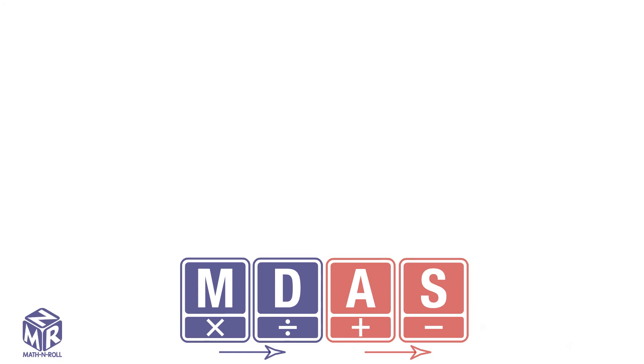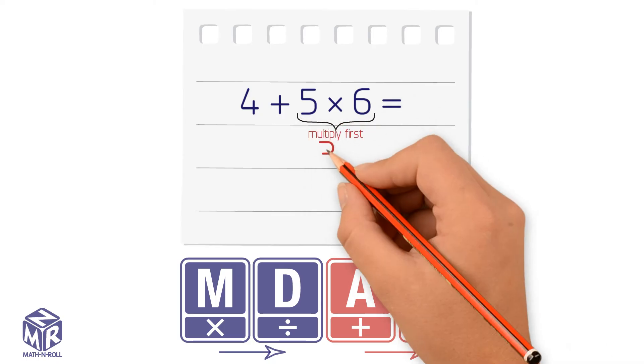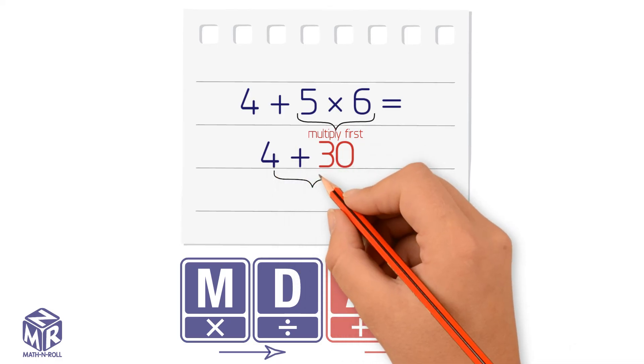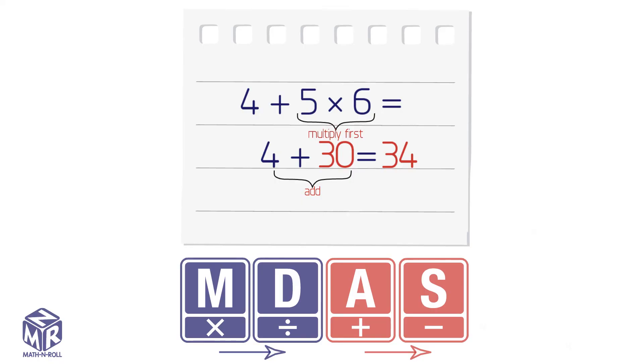Let's try a different problem. 4 plus 5 times 6. According to the order of operations, we multiply first. 5 times 6 equals 30. Now, we add 4 plus 30. We get 34. So, the answer is 34.